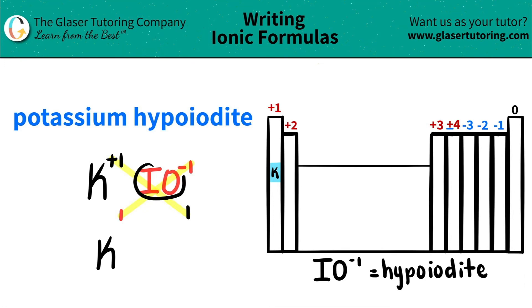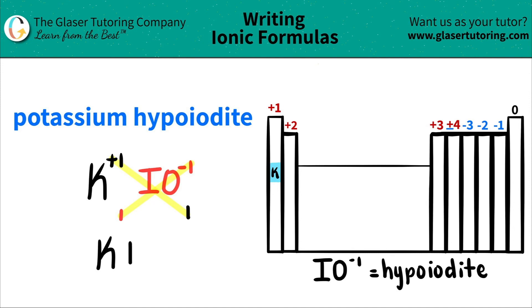So I move on. In this case, I have one iodide, so no need for parentheses — I just put IO. And we're done. So potassium hypoiodide is KIO.